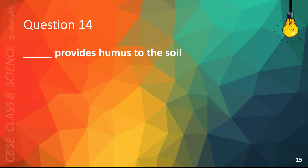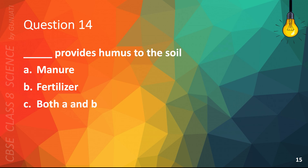Question 14. Blank provides humus to the soil: A. Manure, B. Fertilizer, C. Both A and B, or D. None of the above. The correct answer is A. Manure.